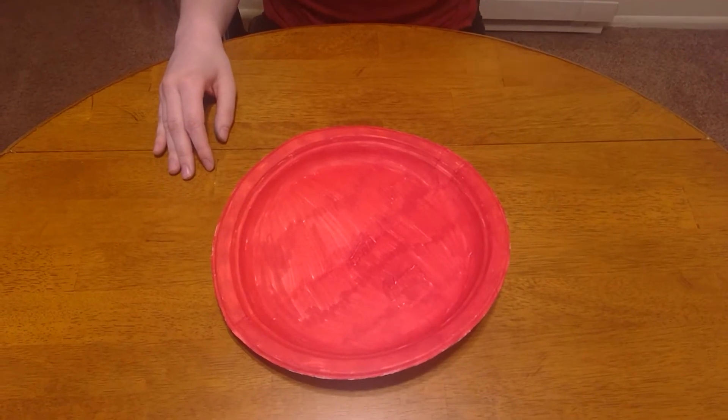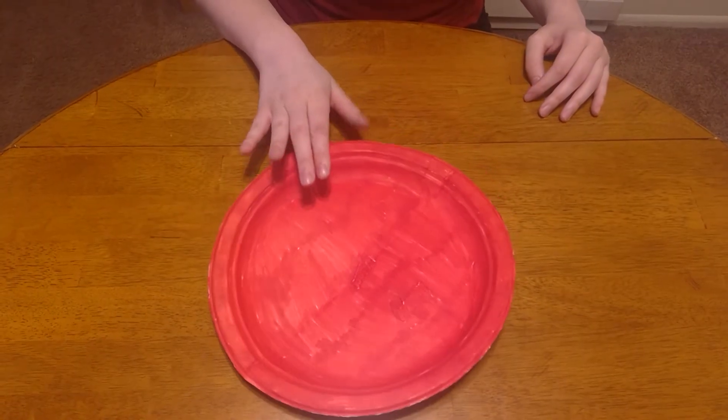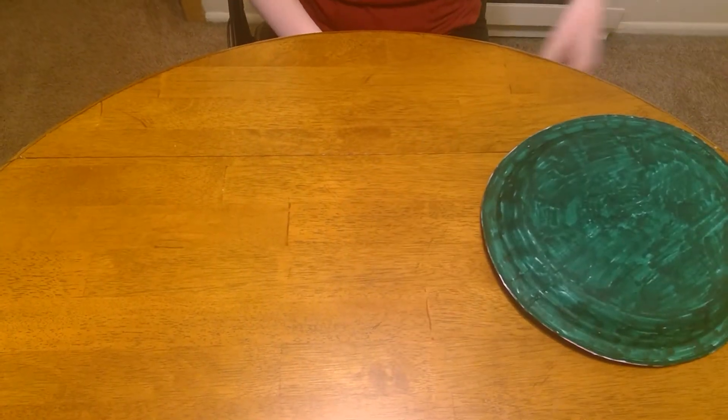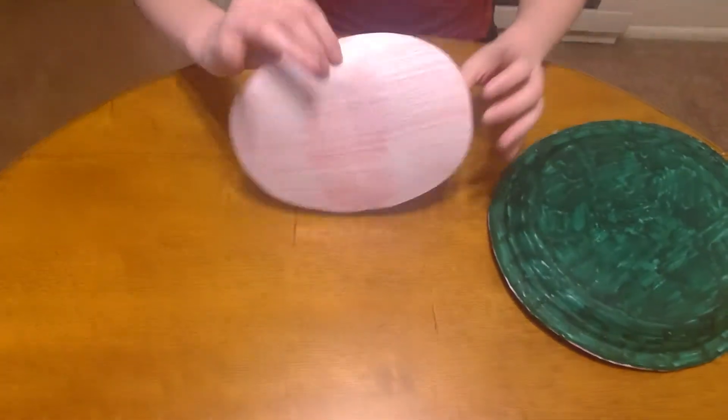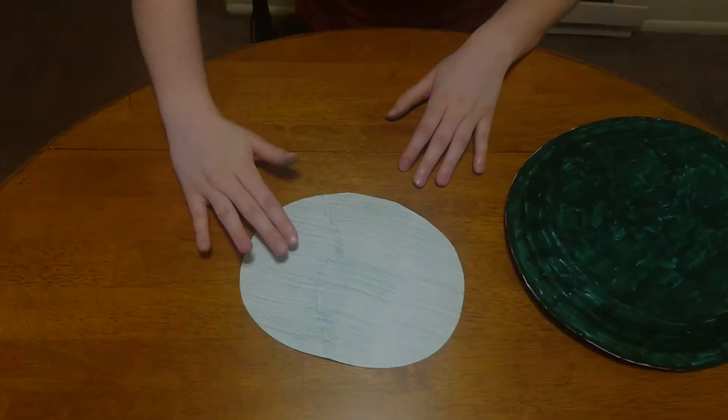Using either the crayons or the markers, you're going to color the inside of the plate red and the outside of it green. If you don't have a paper plate, you can use a piece of paper and do the same. Color one side red and one side green.